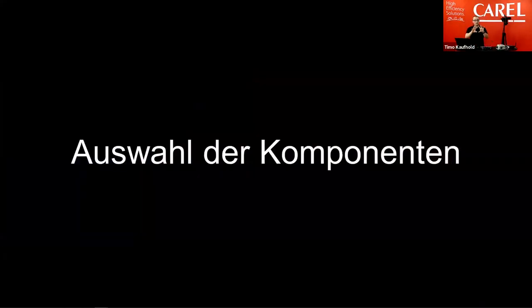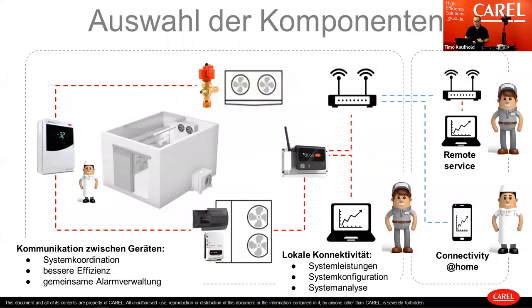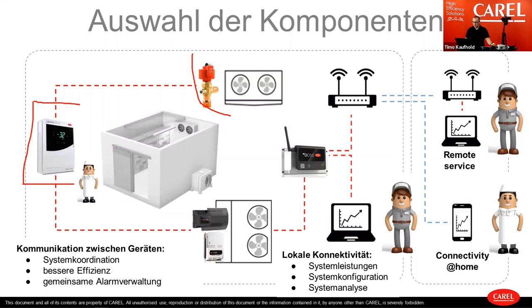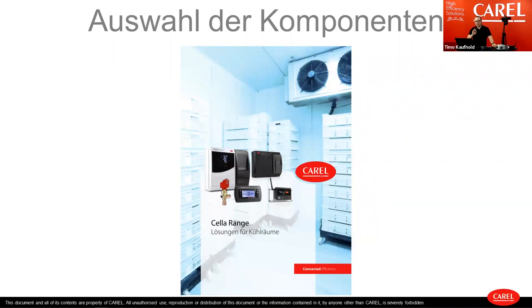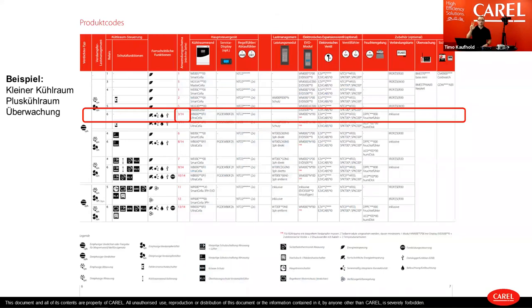Now we will start to select the components. The first part was the recap of Stefano's part. Now we do the selection. We take the standard applications Stefano showed us. We will select the expansion valve — the EXV — and look at how to find the right controller, and how to connect everything together with the gas leakage detector. There is a helpful quick guide or brochure to find the right components, available on our homepage, also in different languages on request.